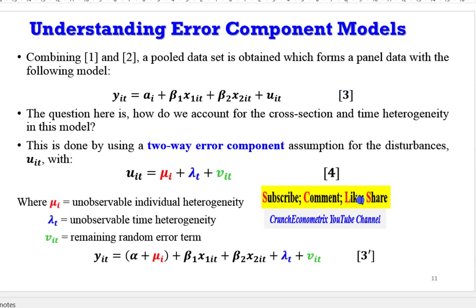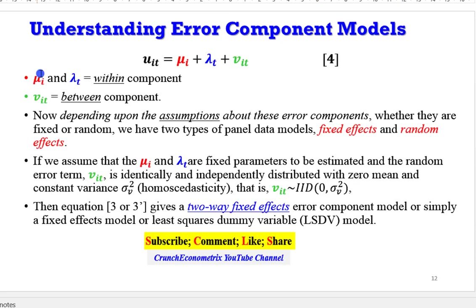So, if we have to rewrite equation 3 as equation 3 prime, we can see that the distribution of the error term is as shown. This is the distribution of the error term capturing individual differences in the model. The lambda t is for the time differences, and this is the remaining random error term that is iid. So, the individual differences and the time differences in the model are known as the within components, where the remaining random error is known as the between components.